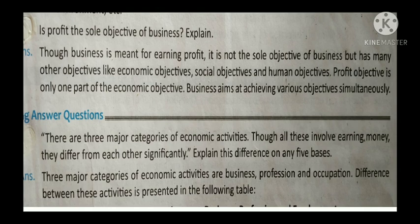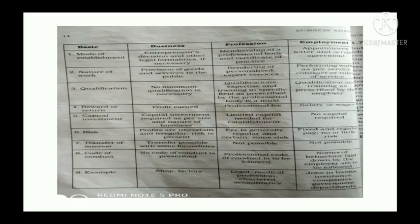The next question: There are three major categories of economic activities. Though all these involve earning money, they differ from each other significantly. Explain this difference on any five bases. The three major categories are Business, Profession, and Employment. You can see the differences on the basis of mode of establishment, nature of work, qualification, reward or return, capital investment, etc. You can study any six points from the table in your textbook, page number 14.